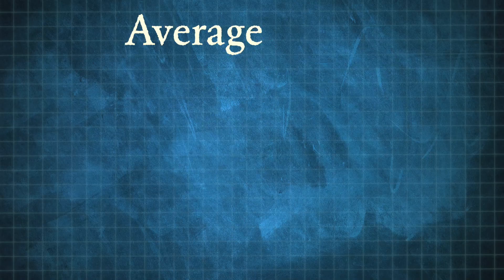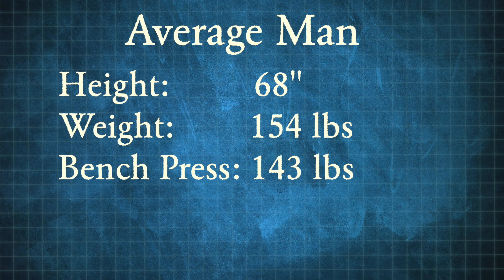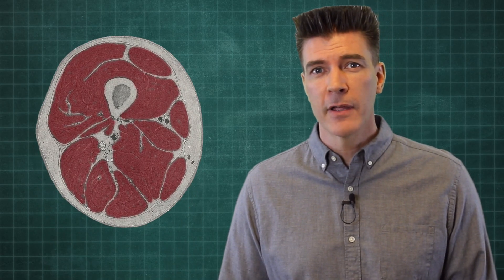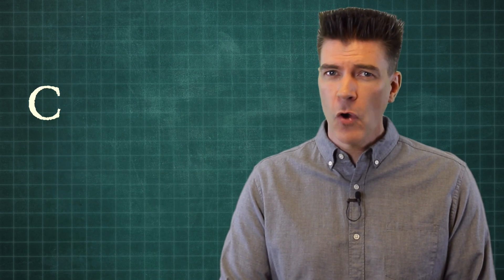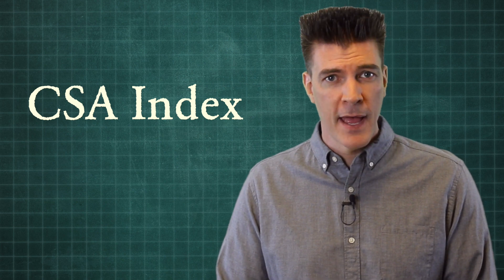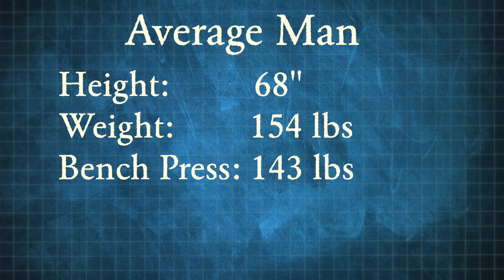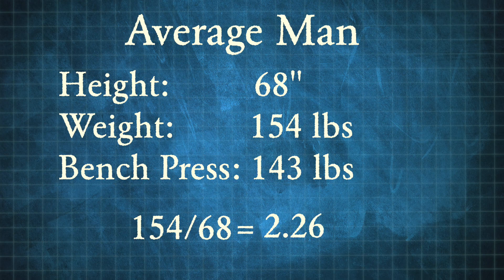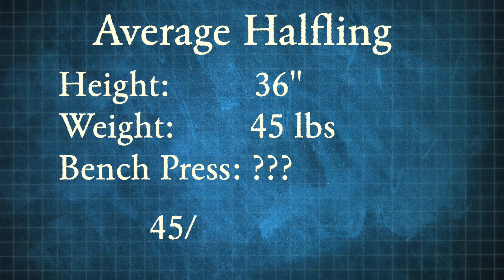So to figure out how strong a halfling would be, we start with the strength of an average man. Since strength is proportional to the cross-sectional area of the muscle, we're going to find a cross-sectional area index for this average man. We're going to divide his weight by his height in inches, and that gives us an index of 2.26. Now we're going to do the same thing with a halfling, and that gives us 1.25.